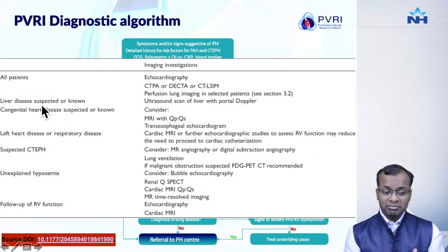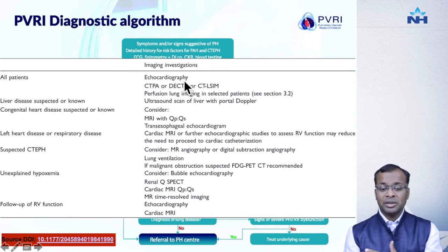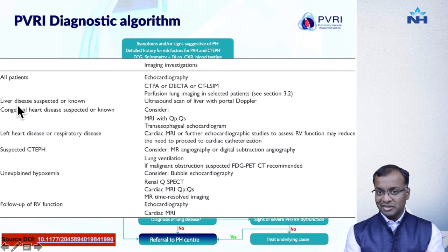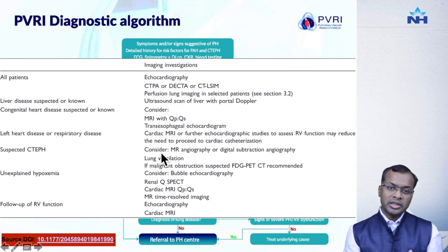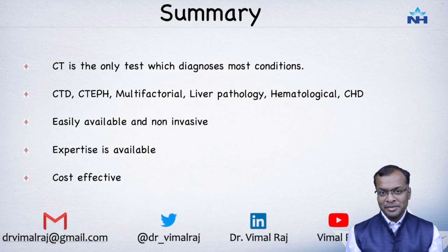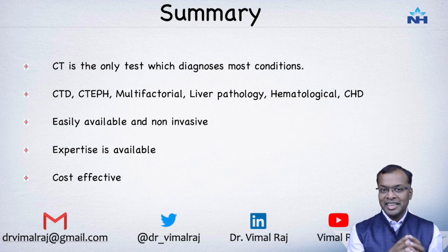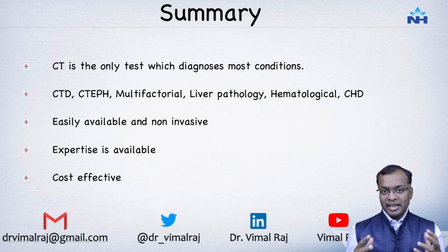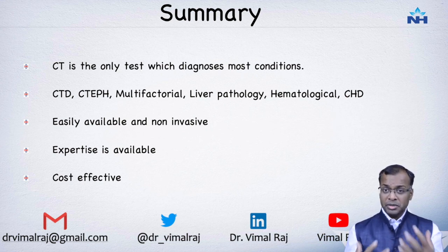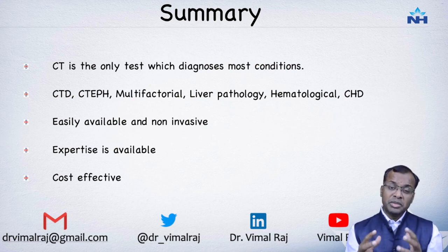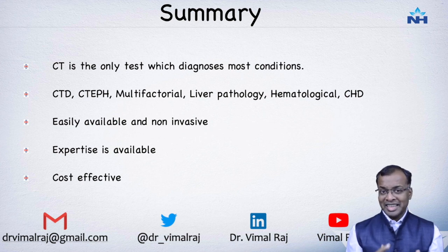Breaking the algorithm down by condition, all patients should have an echo followed by a CT pulmonary angiogram or dual-energy CT pulmonary angiogram — this is very, very important. Whether suspecting liver disease, congenital heart disease, or left heart disease, CT is given an important role everywhere. To summarize: CT is the only test which diagnoses most conditions. Once PH is established or suspected, CT attempts to put everything together across each group and arrive at the correct diagnosis — whether connective tissue disease, CTEPH, multifactorial disease, or liver pathology.